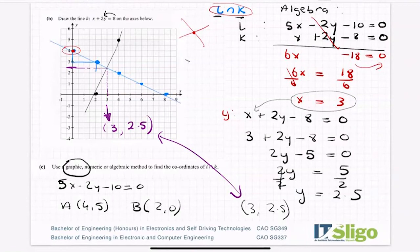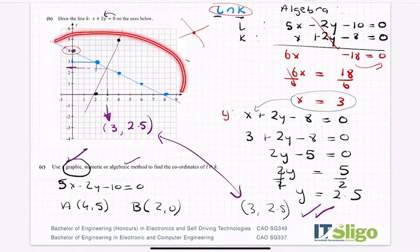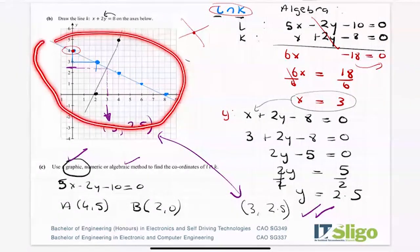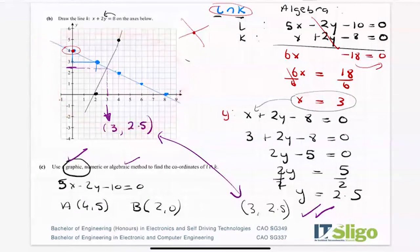There are two methods, and you may wonder if one is better than the other. Algebra will always be more accurate because you're actually working out the value of x and y. Graphically you're at the mercy of how well you draw your lines to be accurate — but here we were fairly accurate and it worked out.